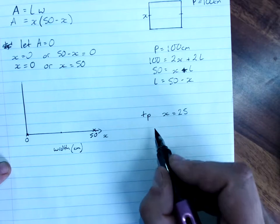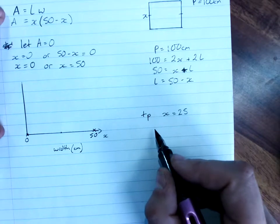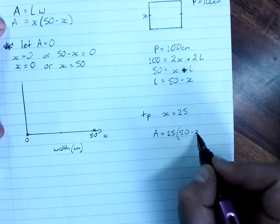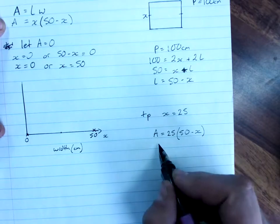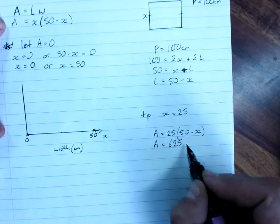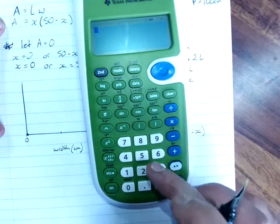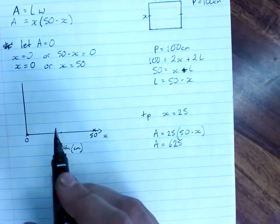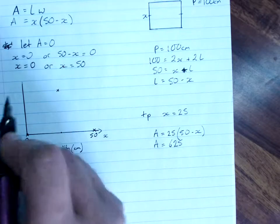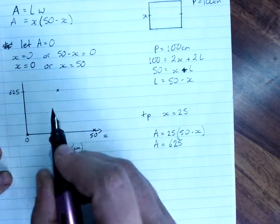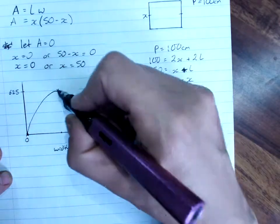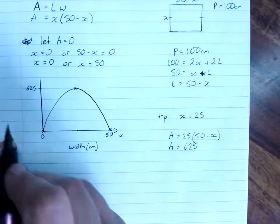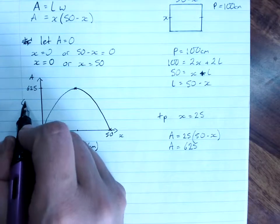At 25, we'll have our turning point. So you substitute that into the formula. Area is 25 times 25, area is 625. Let me check that, it's early in the morning. Yes. So my turning point is at 625. Sketch your parabola. This is area in centimeters squared.